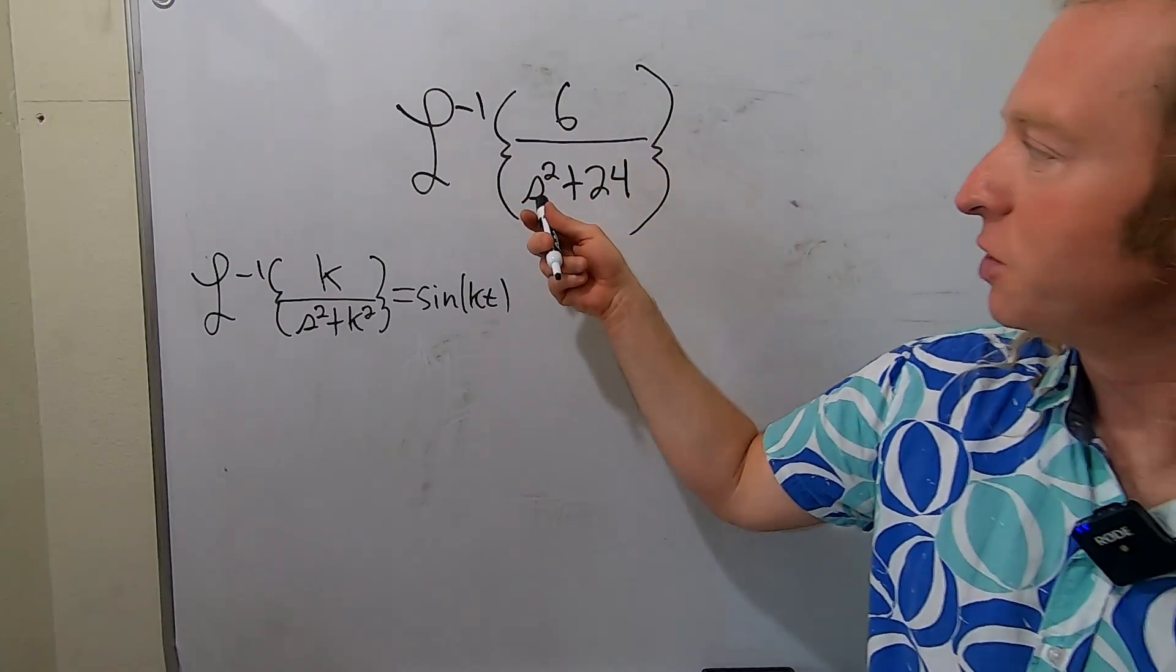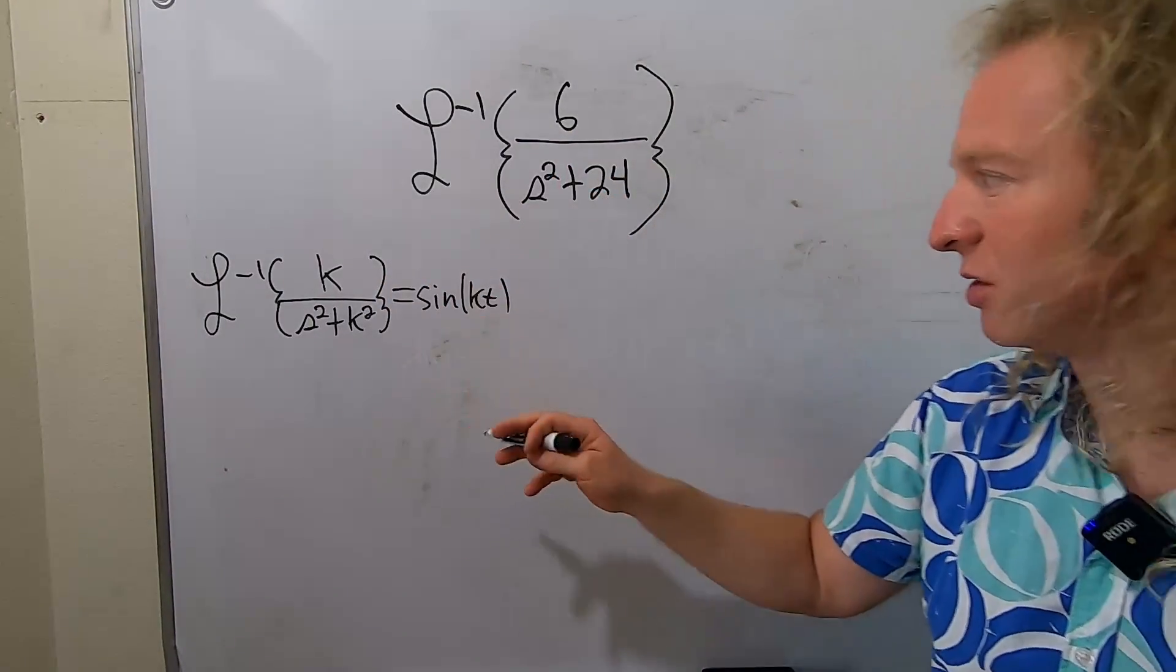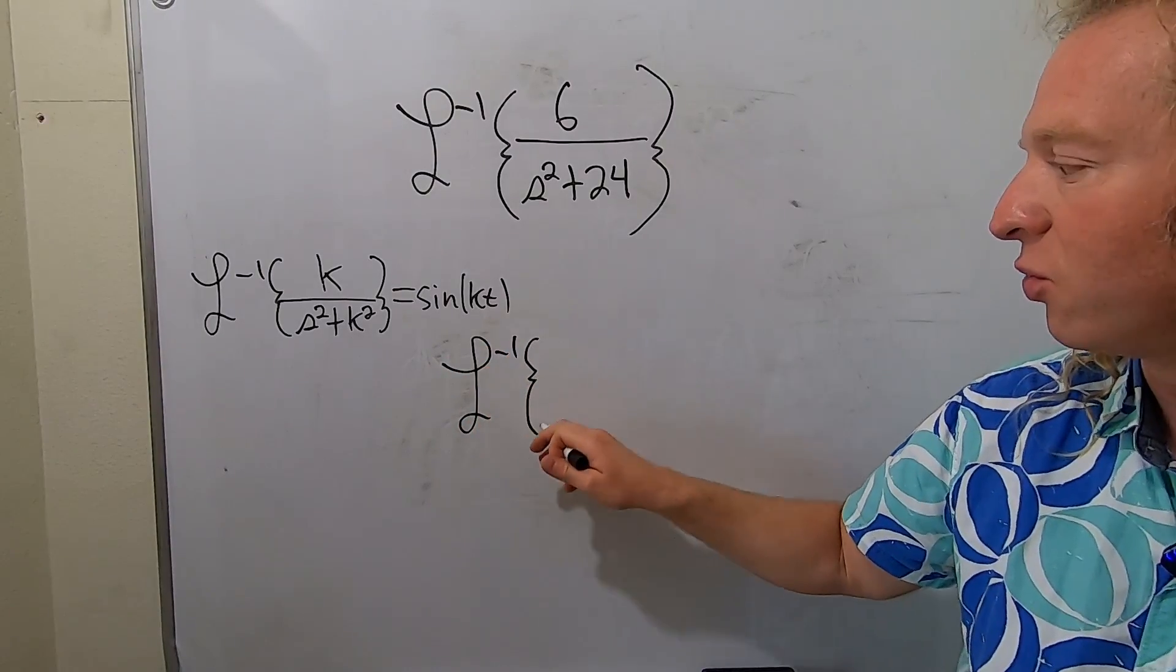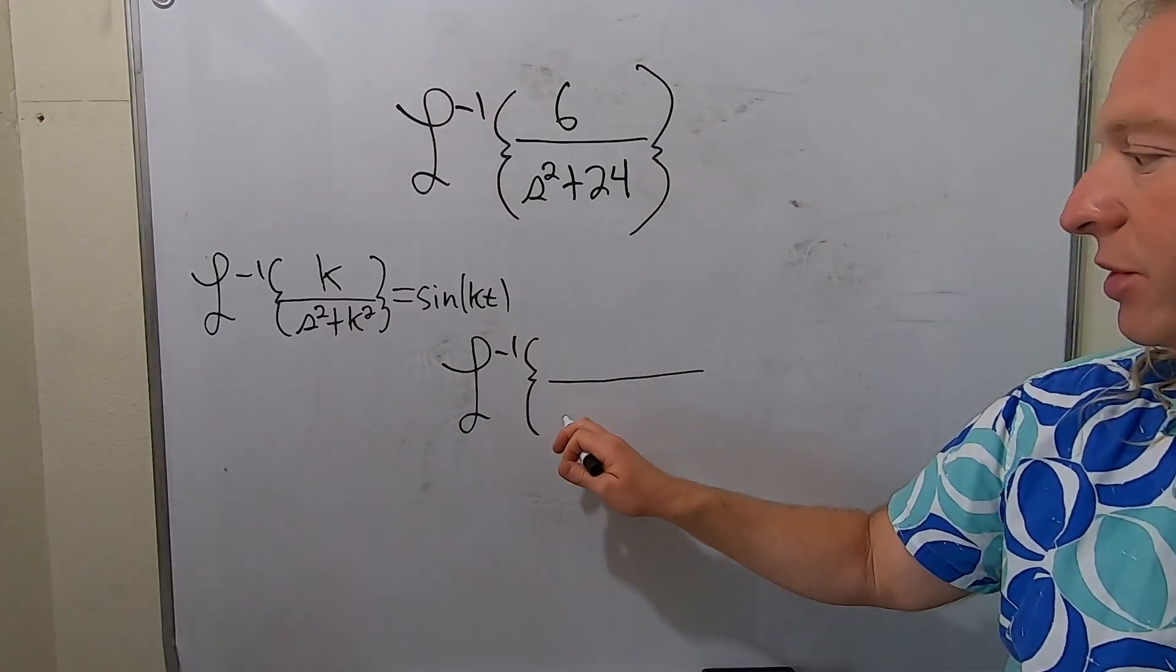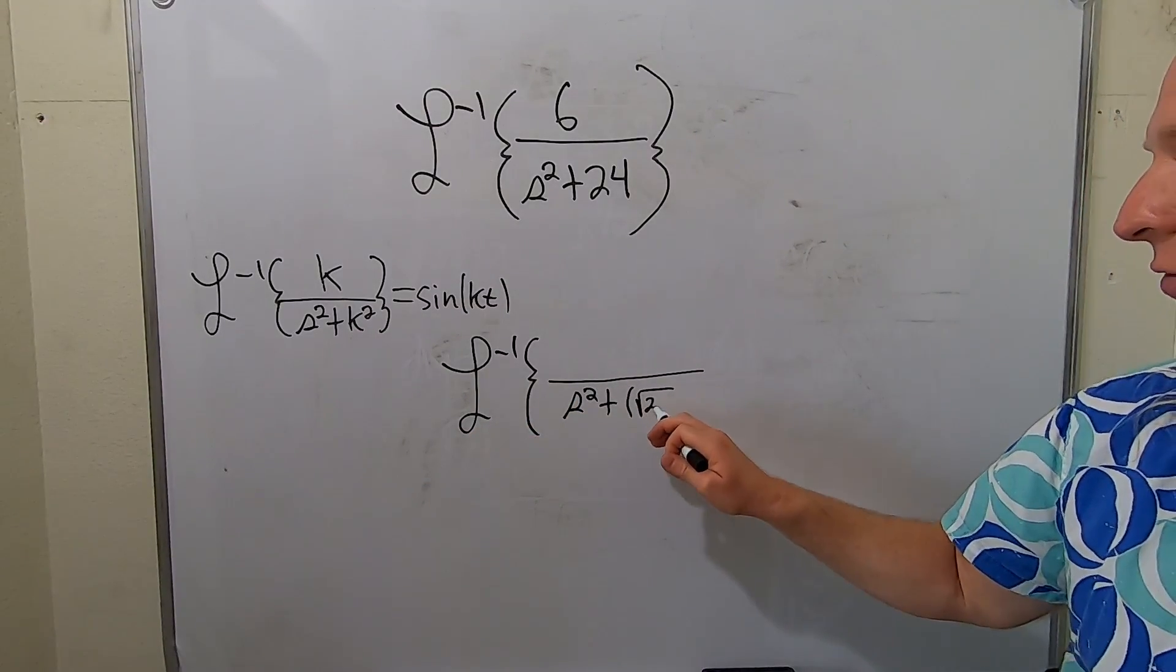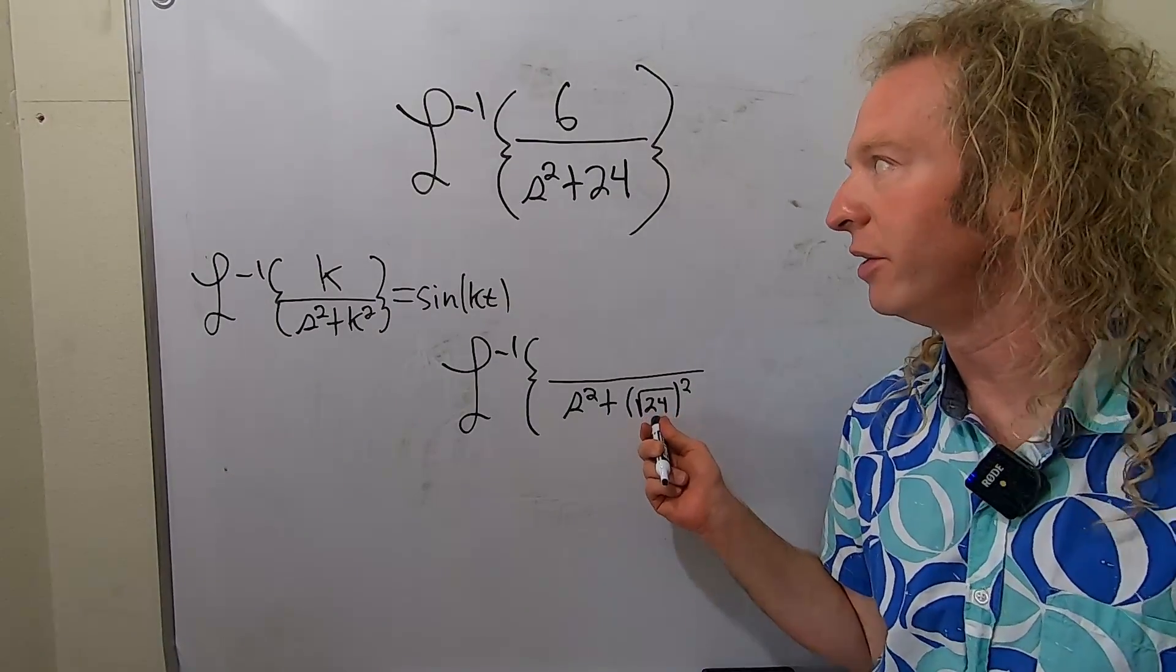We're almost there in this problem. If you look here, you have the 24, that's got to be k squared. The trick is to rewrite 24 in a way that matches k squared. It's s squared plus square root of 24 squared, because if you square the square root of 24, you get 24.